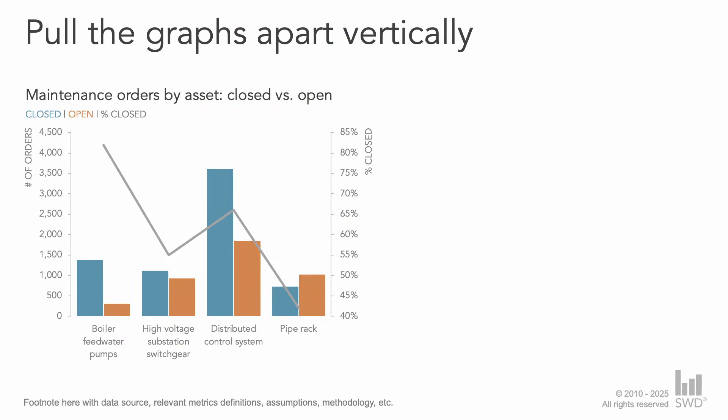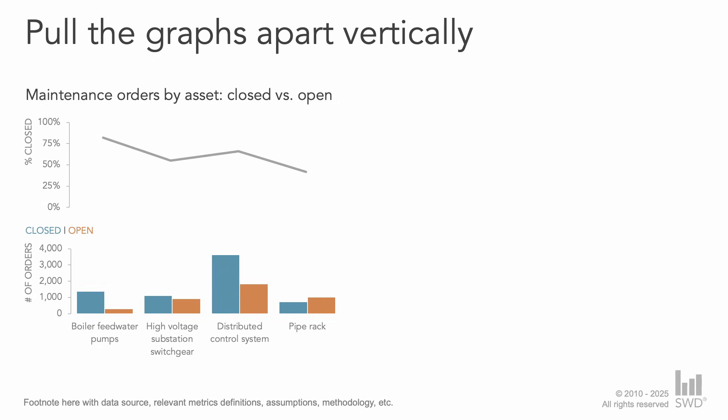One way we can transition away from the combined axes is to pull the graphs apart vertically, leveraging the same horizontal axis across both views but now with each getting its own independent vertical axis.